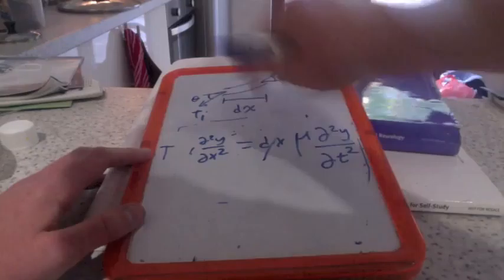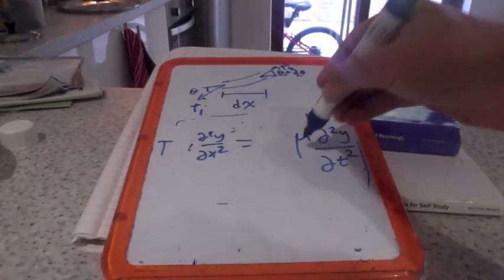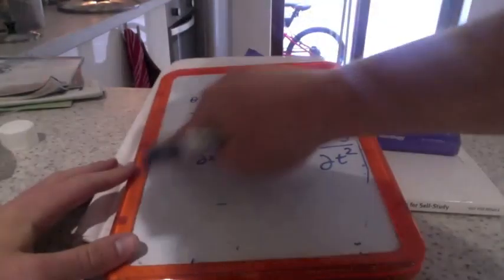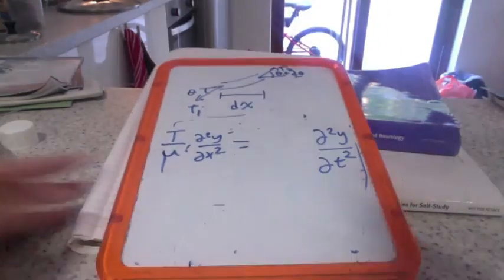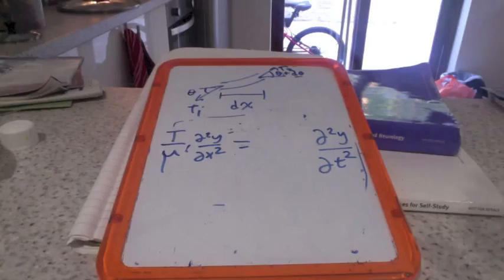Immediately, dx's cancel. I want to bring mu over here, so I divide both sides by mu. Now I ask myself: what is T divided by mu? This seems rather peculiar, doesn't it? Well, if you do some dimensional analysis, it actually seems quite intuitive.